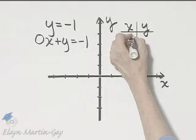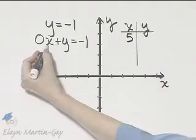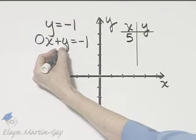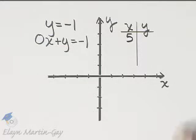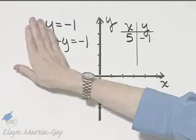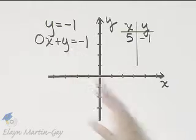So for example, if x is 5, you can put 5 here for x, but 0 times 5 is 0, so that's 0 plus y must be negative 1. No matter what value x is, this term goes away and y must be negative 1.